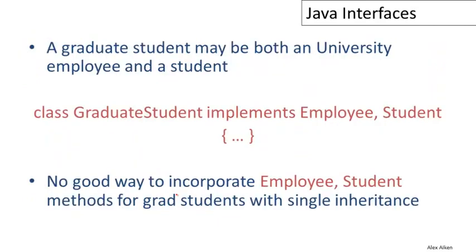Now here's an example of an application of that. So think about a graduate student working at Stanford or some other university. Typically graduate students are students, so they take classes and have all the properties that students have. They get degrees and grades and things like that. But graduate students also typically work for the university.